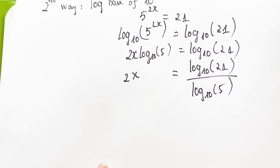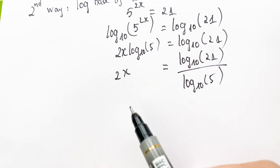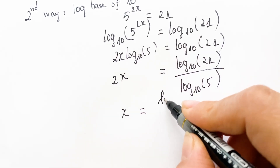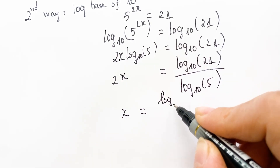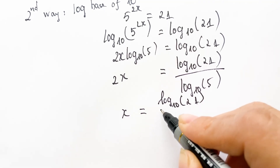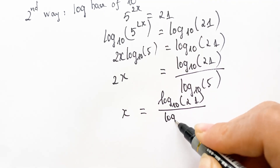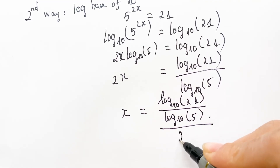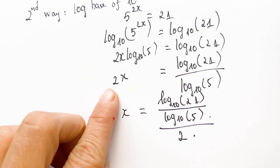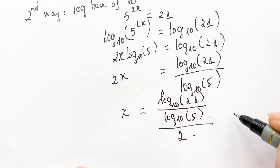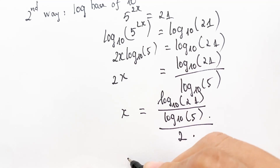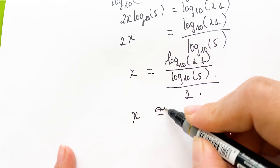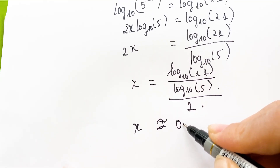So we have 2x equal to log base 10 of 21 over log base 10 of 5, then divide both sides by 2 to get x equal to log base 10 of 21 over log base 10 of 5, all divided by 2.